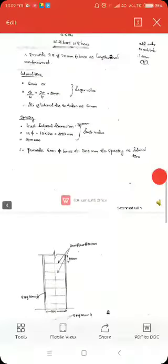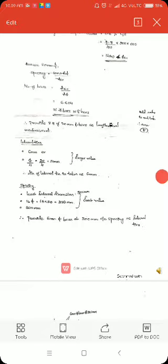We are taking the least value from these three clauses. The least lateral dimension is 300 mm, 16 into 20 is 320 mm, and 300 mm. So we are taking 300 mm as the spacing.